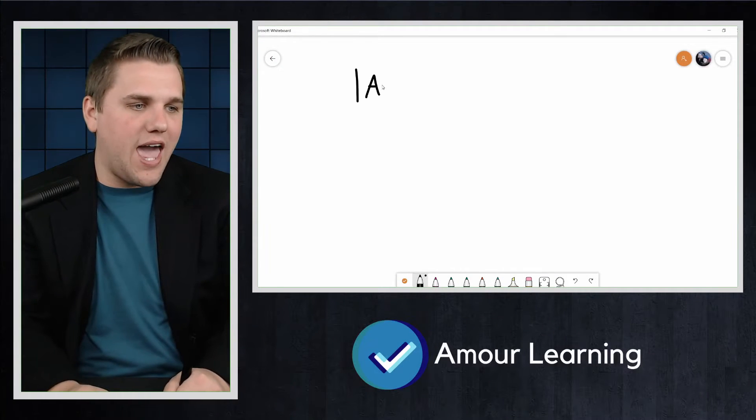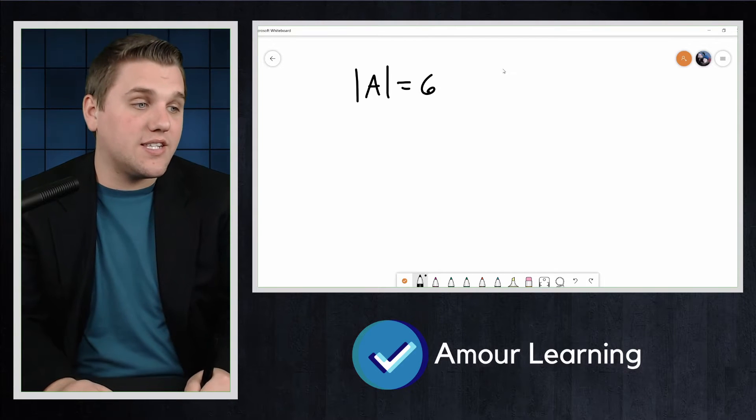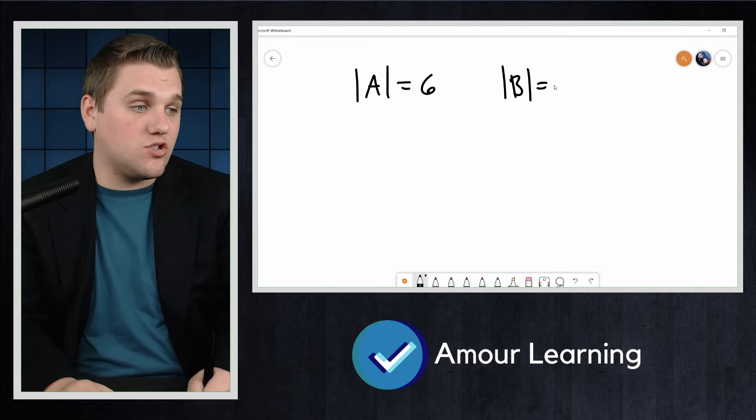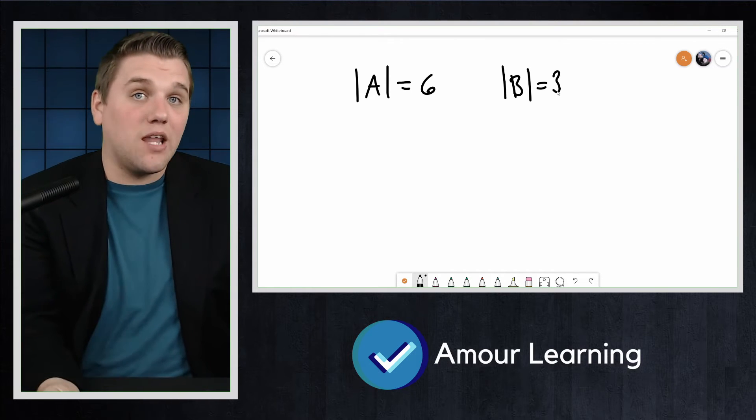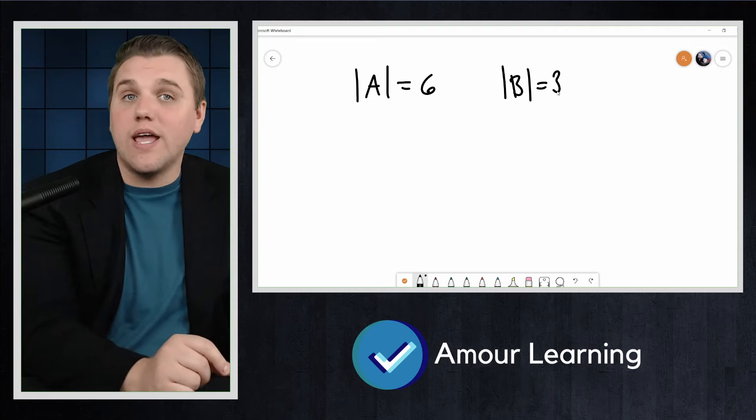We could write, for example, that the size of A is 6, the size of B is 3, and so on to mean that A has 6 elements and B has 3 elements.